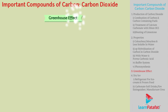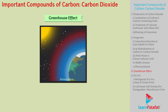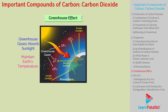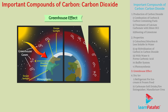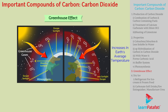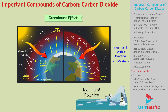Greenhouse effect: A few gases, known as greenhouse gases, absorb sunlight and help maintain the Earth's temperature; carbon dioxide is one of them. This is called the greenhouse effect. Nowadays, an increase in carbon dioxide has led to a rise in the Earth's average temperature, raising threats such as melting of polar ice — so-called global warming.